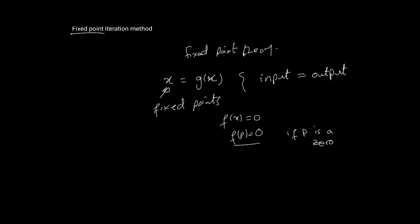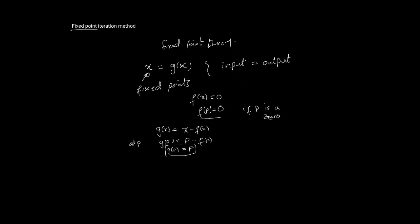If we set up g(x) as x minus f(x), then at p, g(p) equals p minus f(p), which means g(p) equals p, which is the fixed point problem. This means that if we can solve the fixed point problem g(x) equals x minus f(x), that value of x will be the same as a solution of f(x) equals zero.